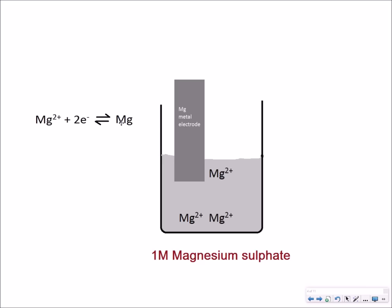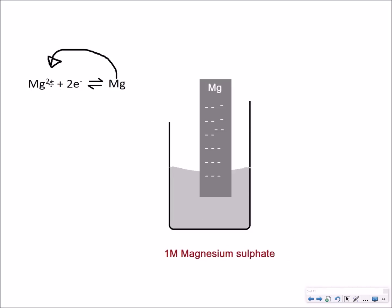Because magnesium tends to lose electrons quite easily, this equilibrium is shifted slightly more to the left, so more electrons are available which are then left behind on this magnesium electrode. This leaves the magnesium electrode with an overall negative charge.